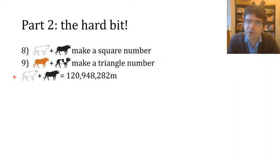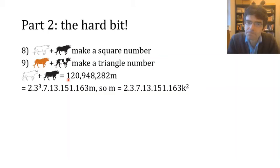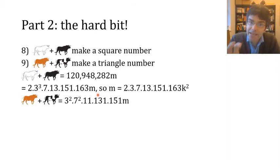So what sort of multiple should we look for? Well, if we take the fact that the first one is a square, what we should do is factorize this large number 120 million etc. and we can take out the factors that will tell us: if we've got to multiply that by m to make a square, then m is going to need to be divisible by 2 and 7 and 13 and 151 and 163, and by 3 at least, and then by some other square factor potentially. So we can say that m has a particular form, some multiple of k² for some other integer k.